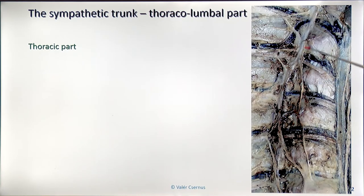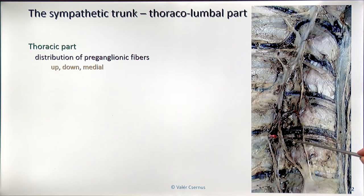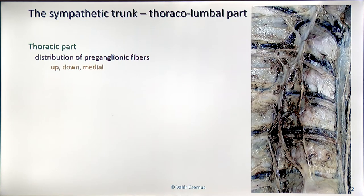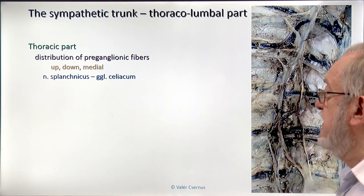Most of the pre-ganglionic fibers run up and down in the system. The upward-running fibers go up to the cervical part of the sympathetic trunk, as described before. In the lower part, especially in the lumbar region, they go down to the sacral part, and a couple of fibers join ganglia. They go medially toward the unpaired ganglia of the sympathetic system in the abdomen. These fibers which go medially, aiming at the unpaired ganglia — especially the celiac ganglion — are named the splanchnic nerve.